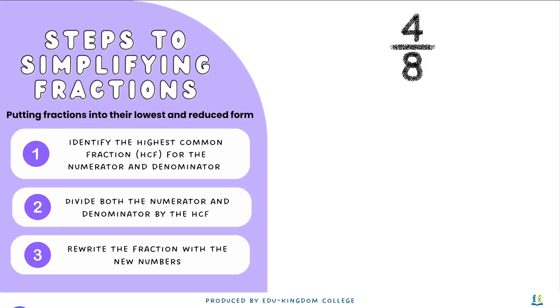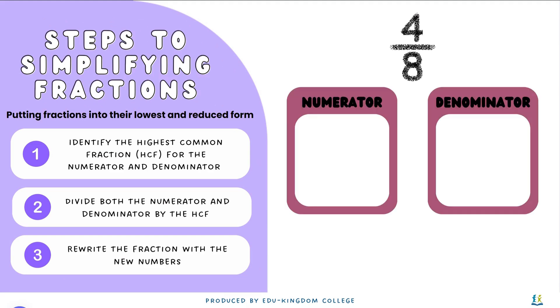Let's apply these steps to an example. On the right here, there's 4 over 8 as a fraction. First, we have to split them up into numerator and denominators. Then, we have to find the factors of each number.